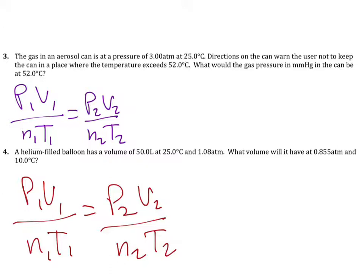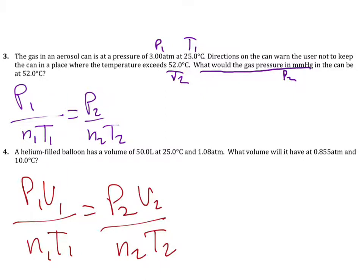The next problem gives us a pressure and a temperature. The directions on a can warn the user not to keep it where the temperature exceeds 52 degrees Celsius. The question asks: what would the gas pressure in millimeters of mercury be at that temperature? We're solving for P2. Volume isn't changing — the aerosol can stays the same — so we cross out volume and moles. We end up with P1 over T1 equals P2 over T2.